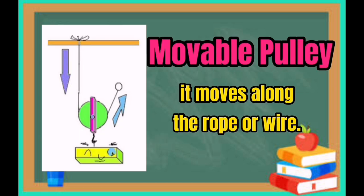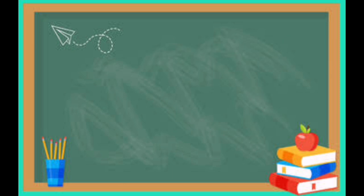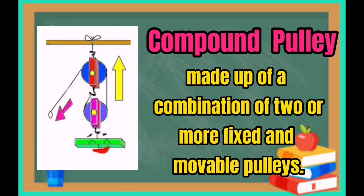A moveable pulley moves along the rope or wire. A compound pulley is made up of a combination of two or more fixed and movable pulleys.